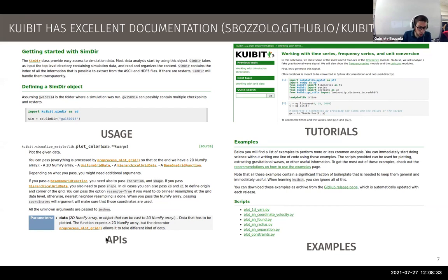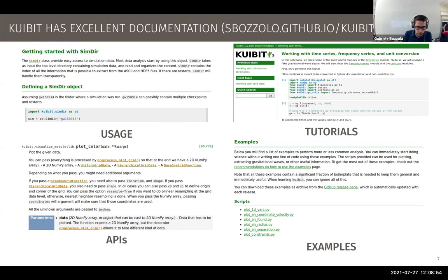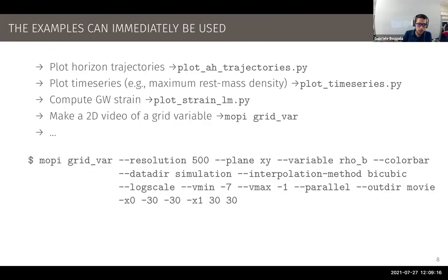Third, every single function in Qubit is documented — you can find what it's supposed to do, what type of data it expects, and what return values it produces, so you can more easily write your own scripts. Finally, and I think most importantly, Qubit has many examples. Examples are good models of how Qubit is intended to be used, and second, examples can immediately be used for science.